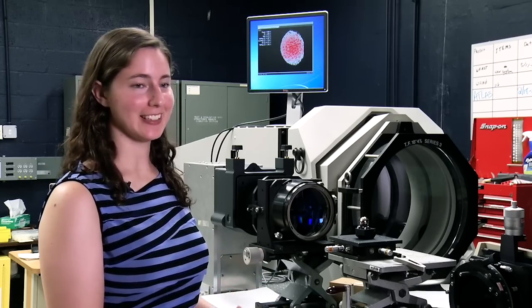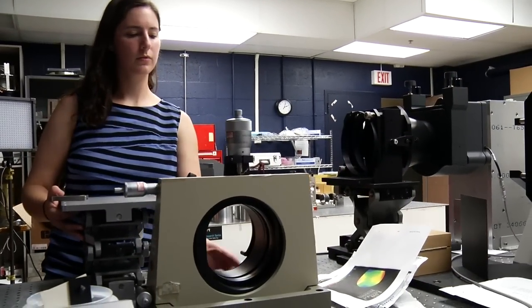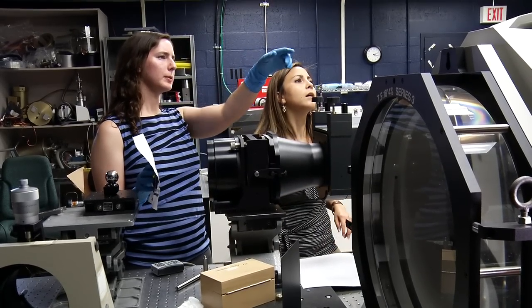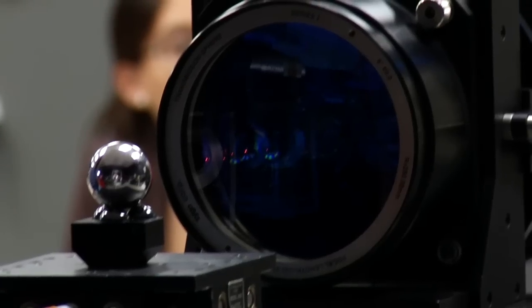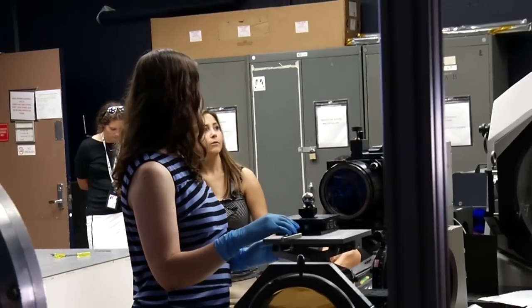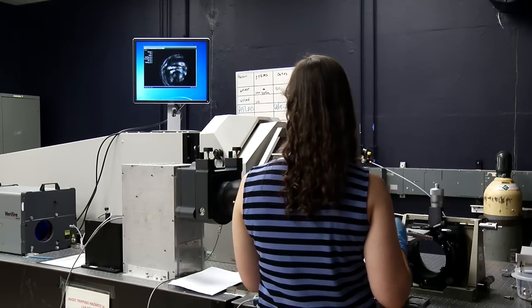This is basically the bare bones of what we do to measure the elements of the grism. We have a calibrated ball. It measures the difference to get from one surface to the other. It tells us how the prototype for the grism is performing.